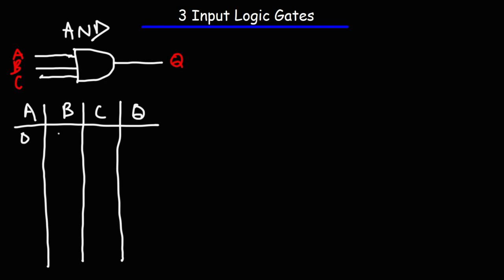First, let's write up the three different input possibilities: it could be 0-0-0, 0-0-1, 0-1-0, 0-1-1, 1-0-0, and so forth — covering all eight combinations.